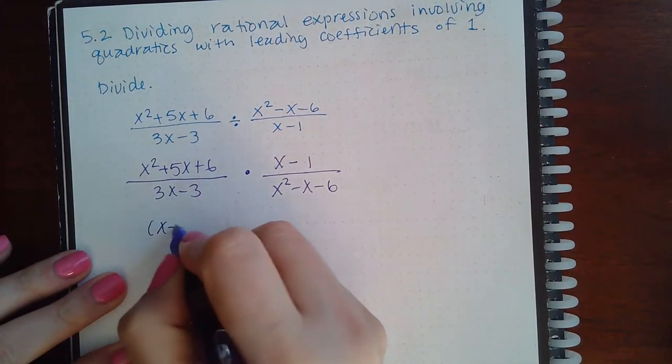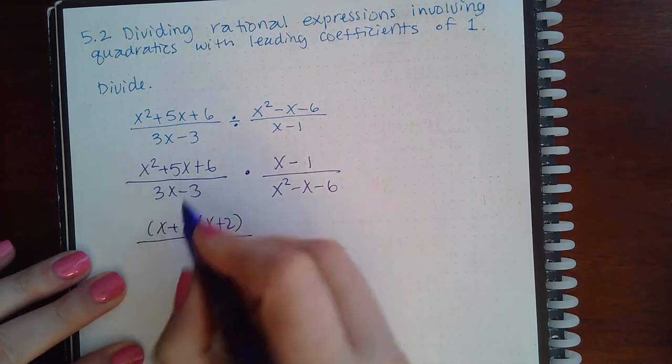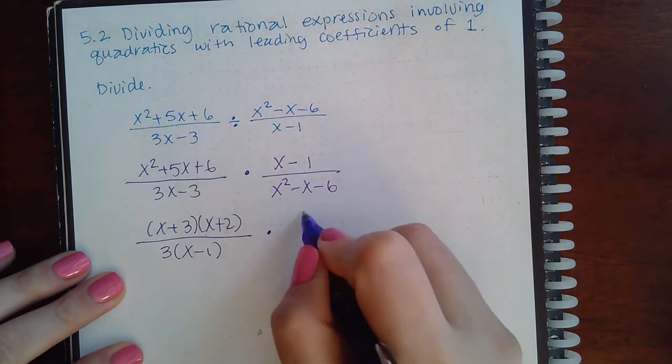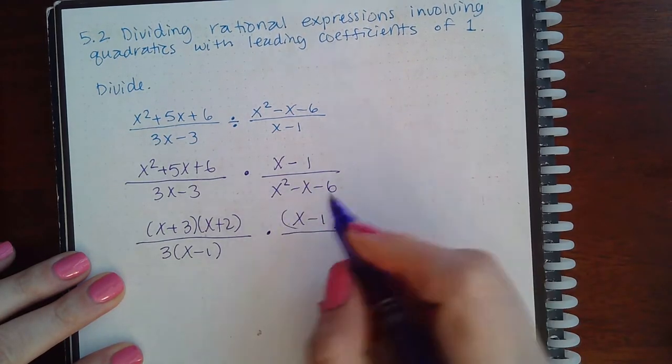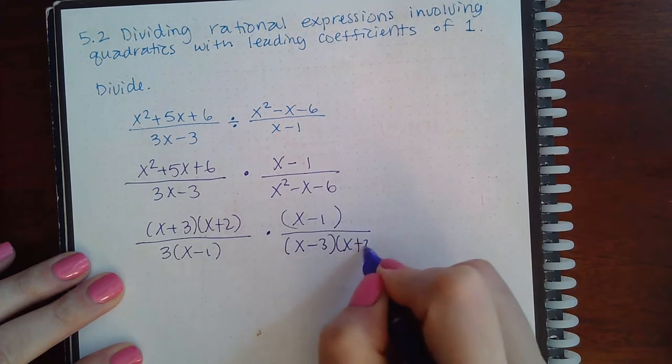So this factors into x plus 3 and x plus 2. The denominator factors into 3, x minus 1. Here you have x minus 1, which is its own factor. And here you have x minus 3 and x plus 2.